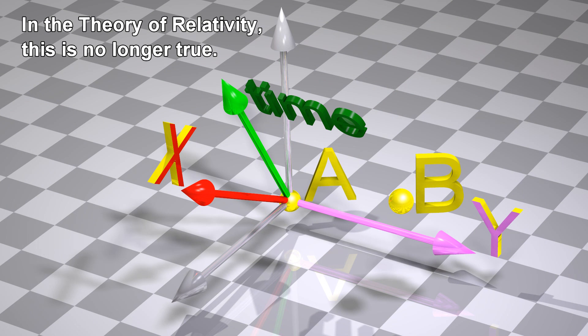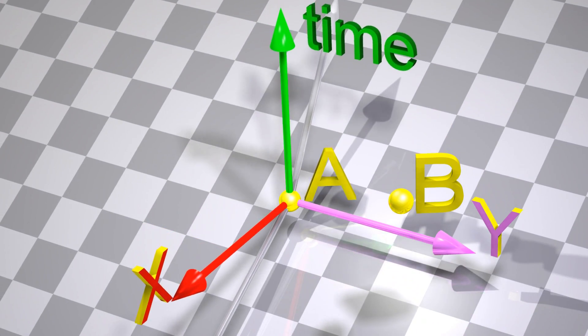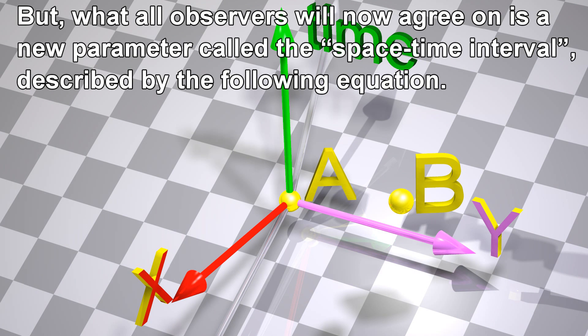In the theory of relativity, this is no longer true. But what all observers will now agree on is a new parameter called the spacetime interval, described by the following equation.